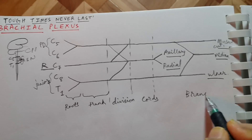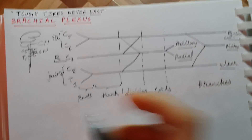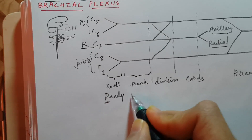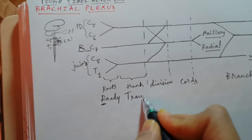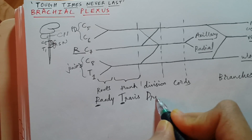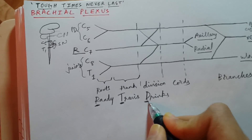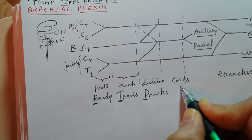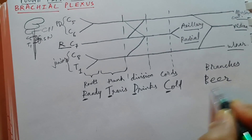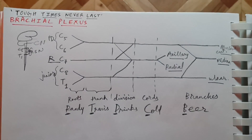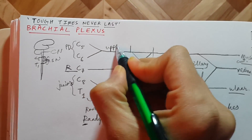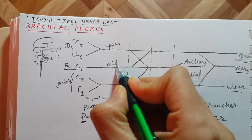The mnemonic for this is 'Randy Travis Drinks Cold Beer' — R for roots, T for trunk, D for division, C for cords, and B for branches. The trunks are the upper trunk, middle trunk, and lower trunk.